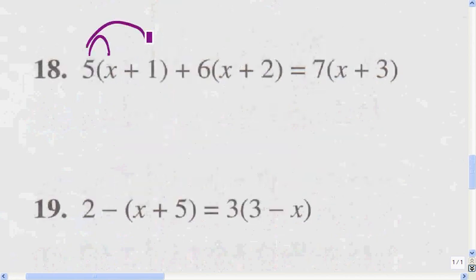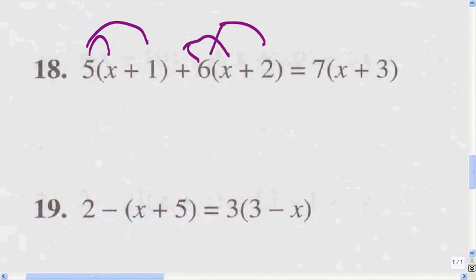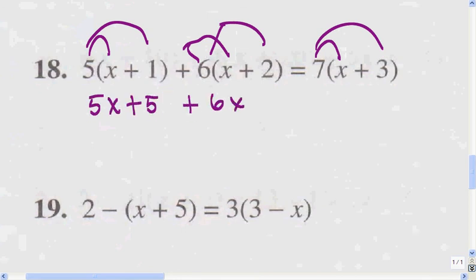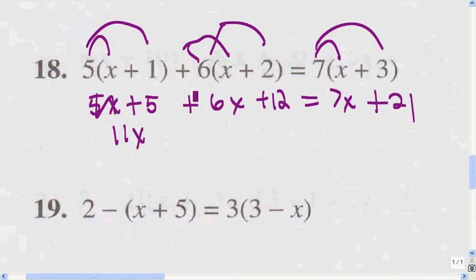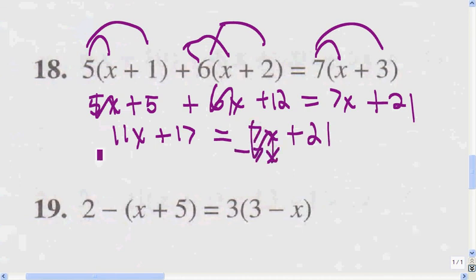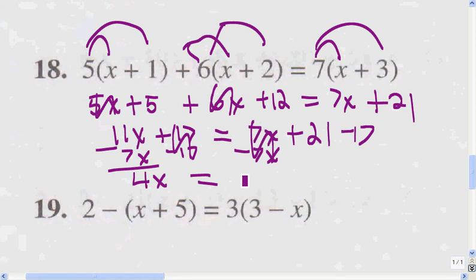Remember, the first step is to get rid of parentheses by multiplying. So that's going to be 5x plus 5 plus 6x plus 12 equals 7x plus 21. Combining like terms: 5x plus 6x is 11x, and 12 plus 5 is 17, giving 7x plus 21. Subtract 7x from both sides to get 4x. Subtract 17 from both sides to get 4. So x equals 1 because we divide both sides by 4.